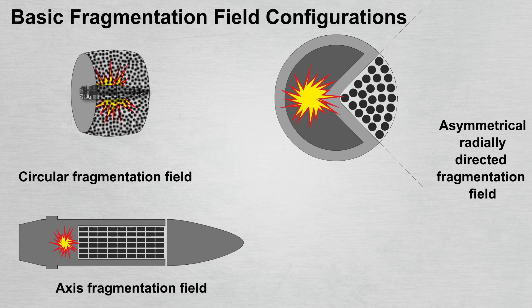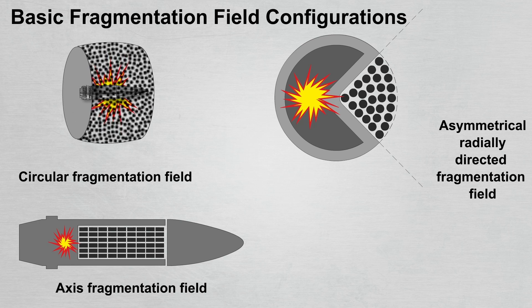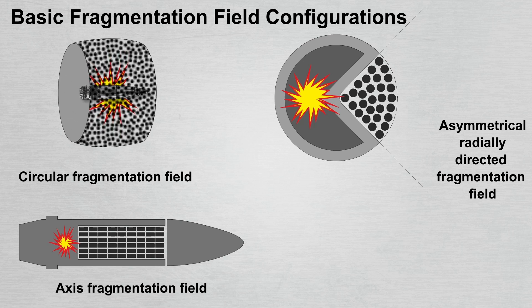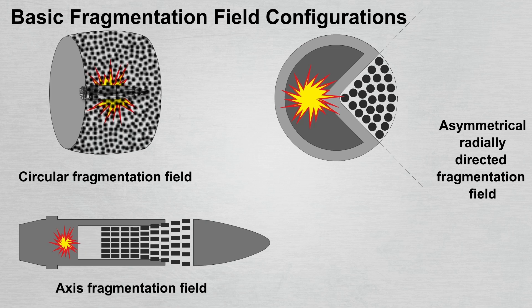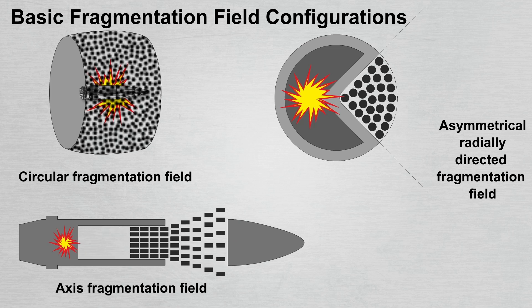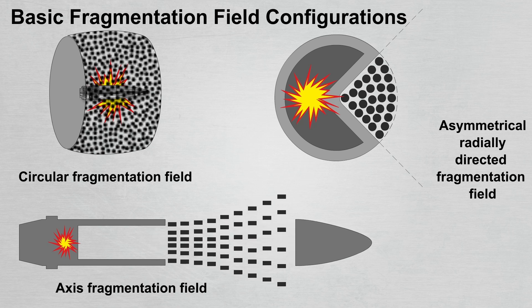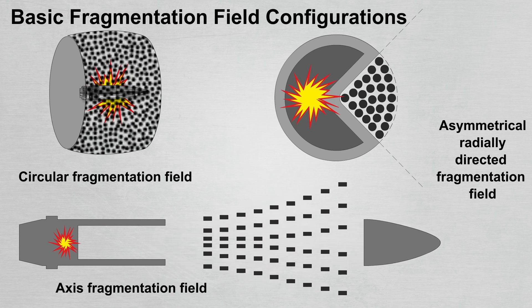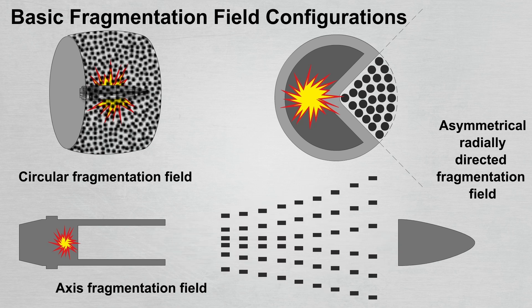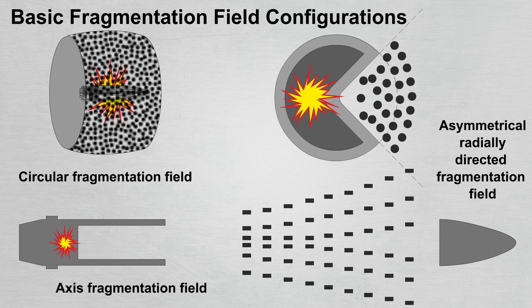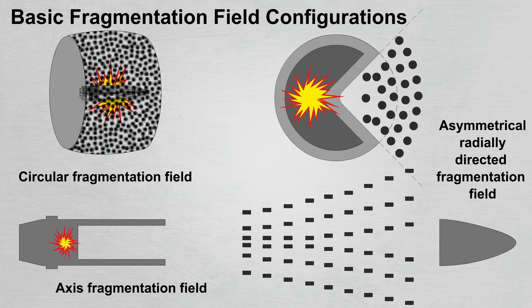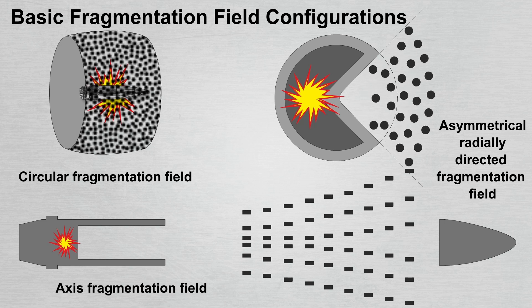This slide presents a comparative configuration of three types of fragmentation fields. In order to achieve a certain type of fragmentation field, there are a number of requirements for the design and layout of ammunition. The formation of fragments occurs due to the expansion and destruction of the fragmentation shell under the influence of detonation products. This process is quite complex due to a large number of influencing factors.